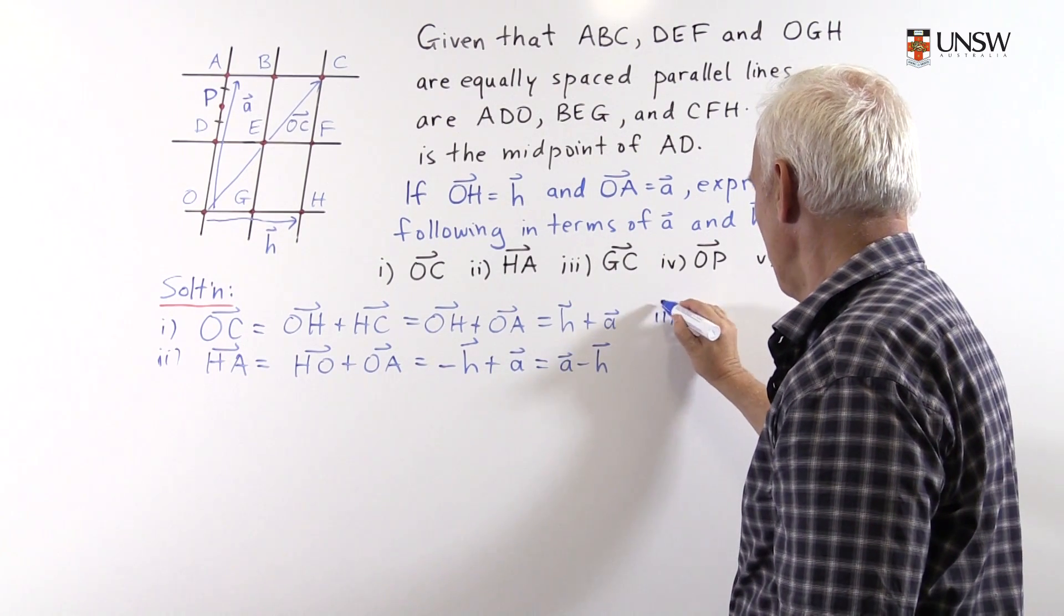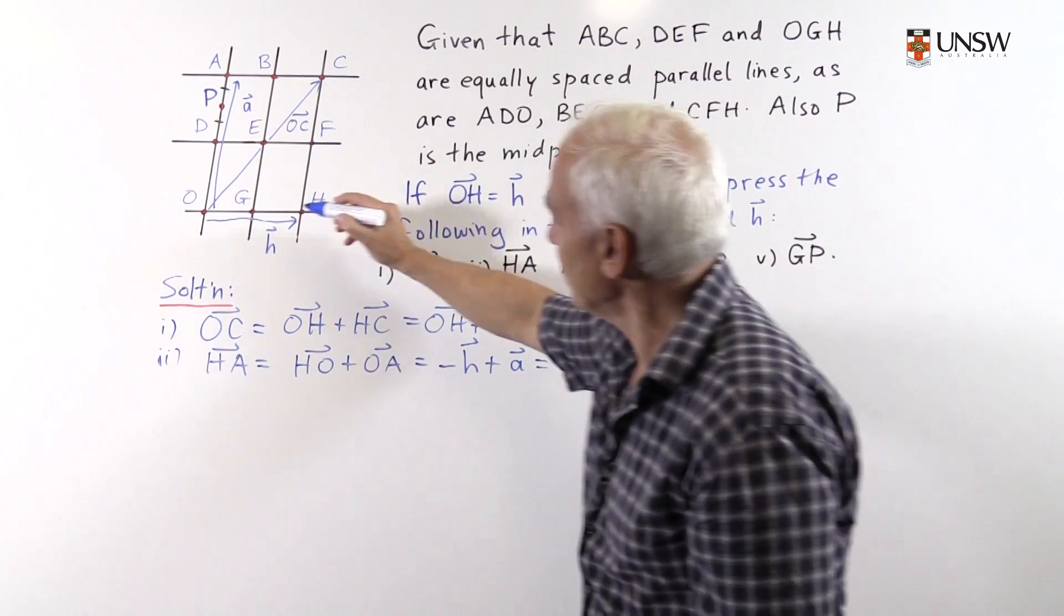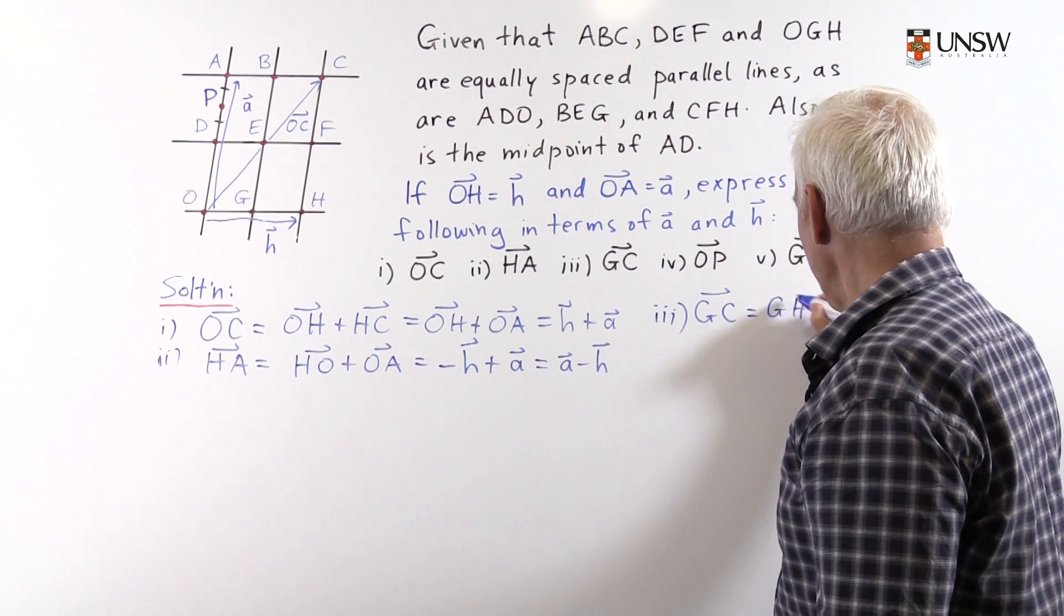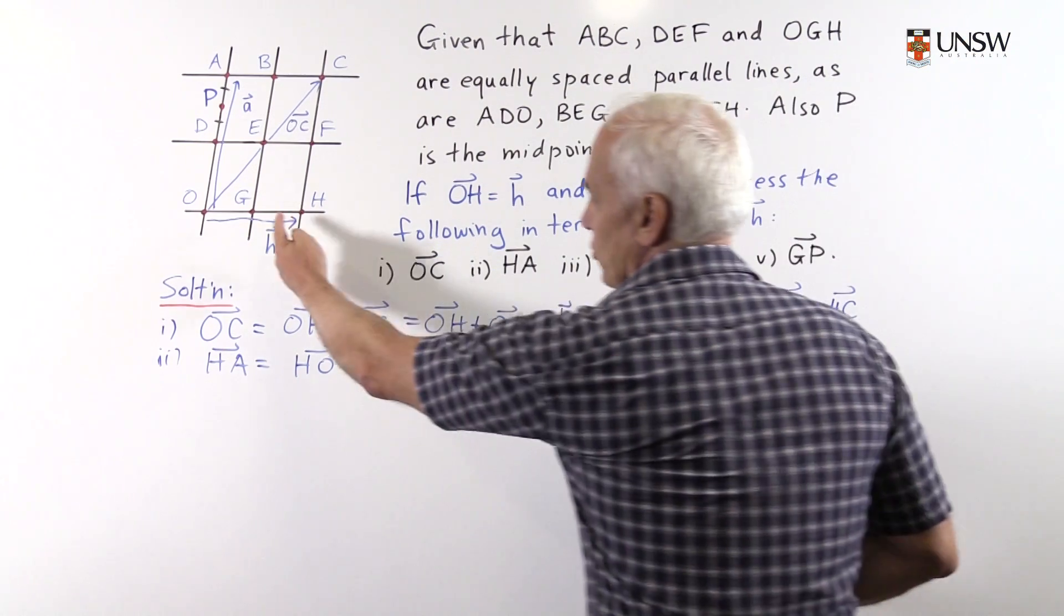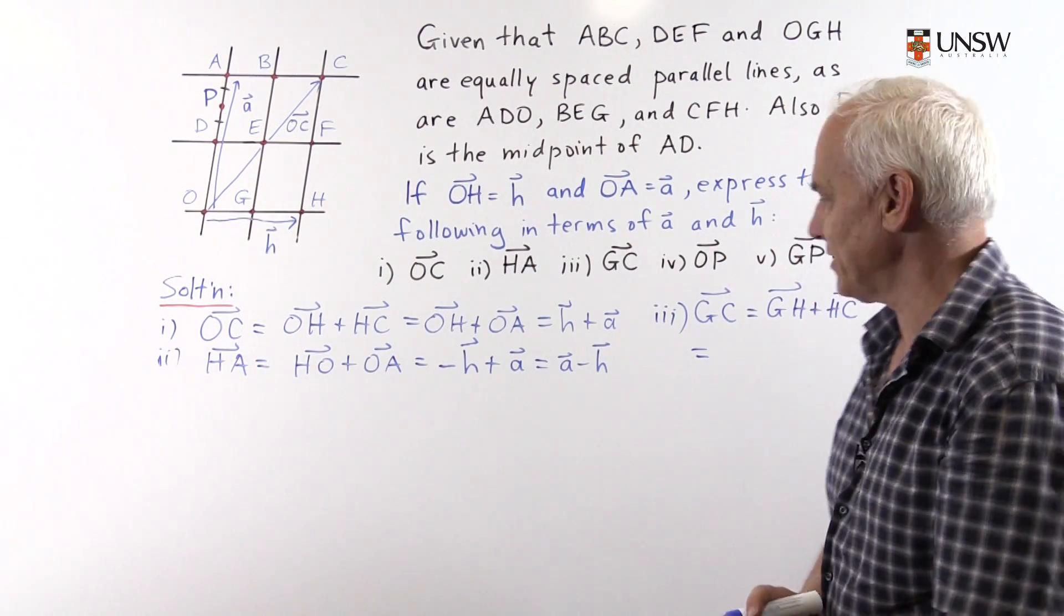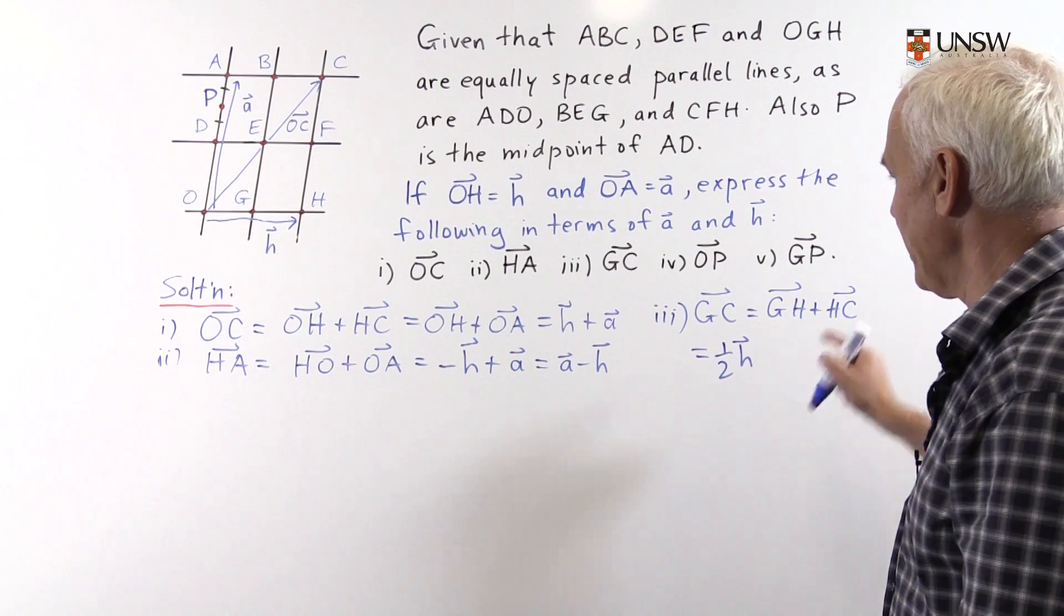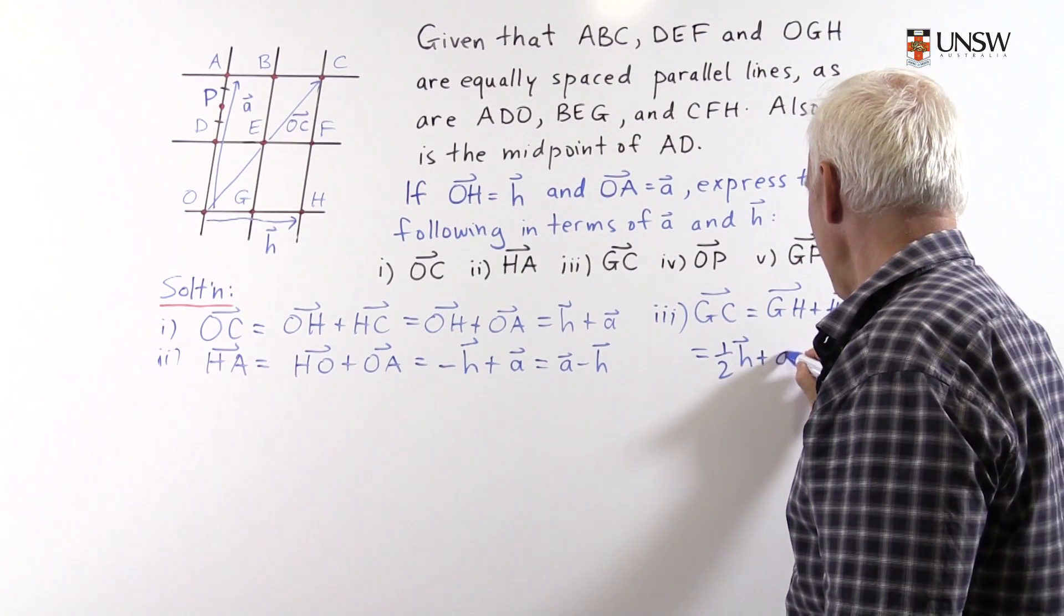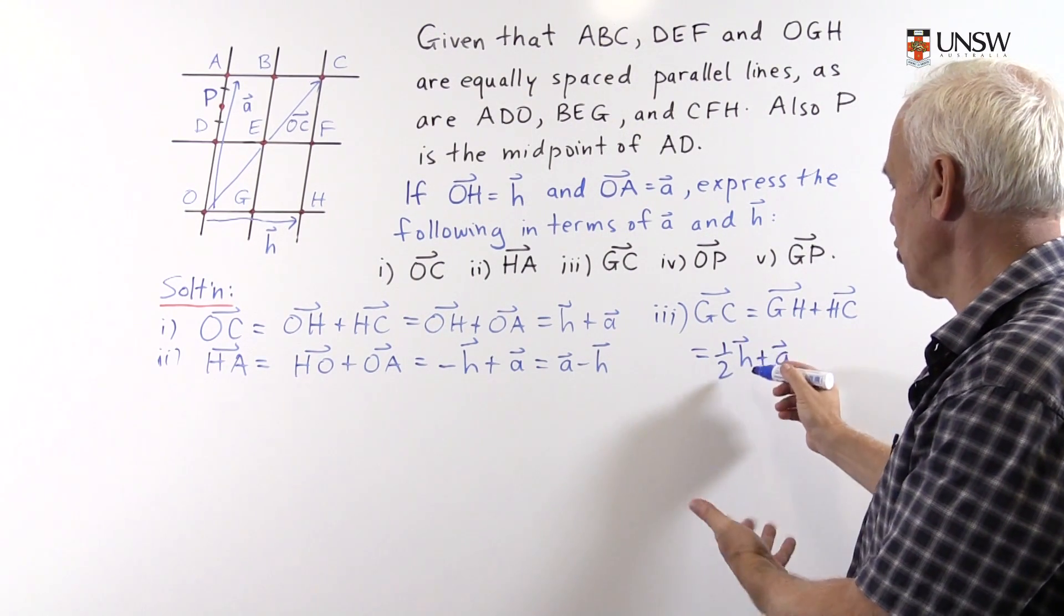How about over here? We'll go to vector GC. Where is that? Well, it's the vector from here to here. Let's write that as going first from G to H and then from H to C. Now the vector GH is exactly half of the vector OH because we're assuming these are equally spaced lines. So GH is just one half of H. And HC, we've seen before, is parallel to OA, so it's the same as the vector A. So we've written GC as the combination of H and A.